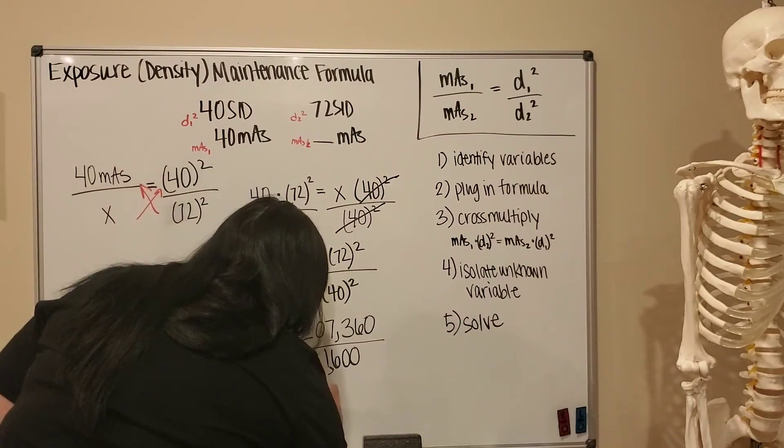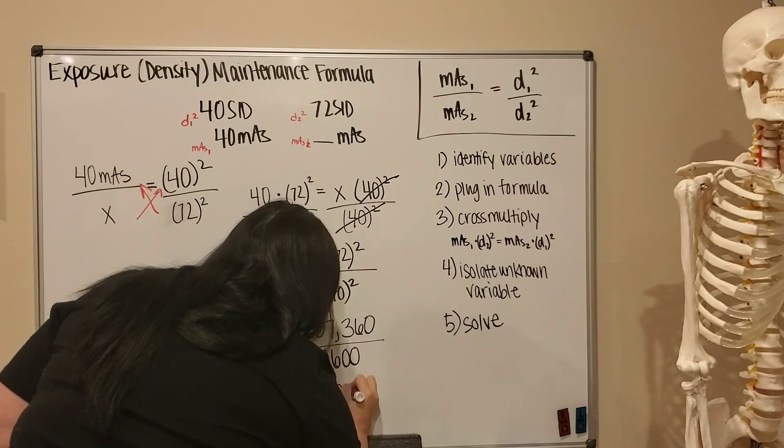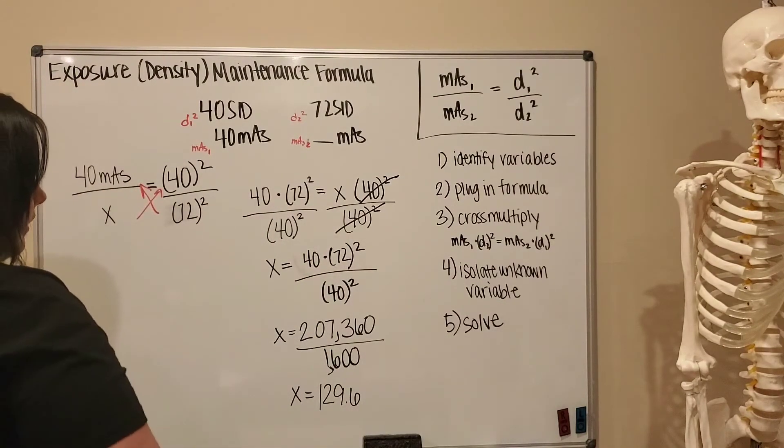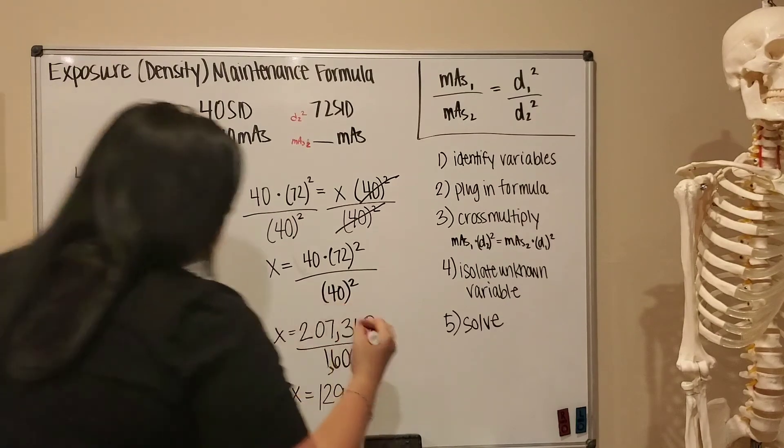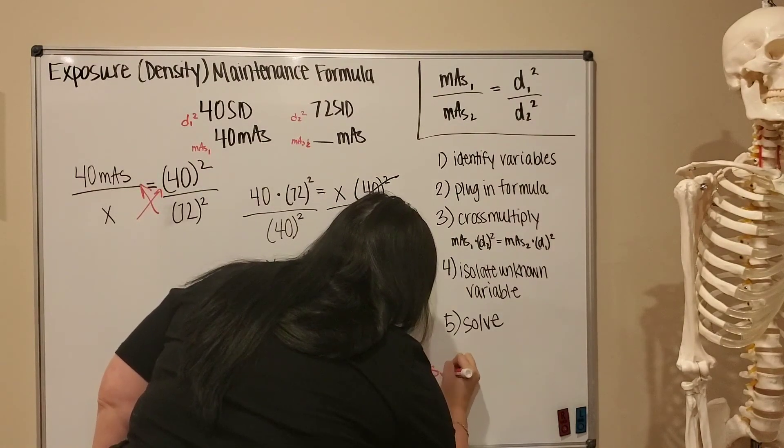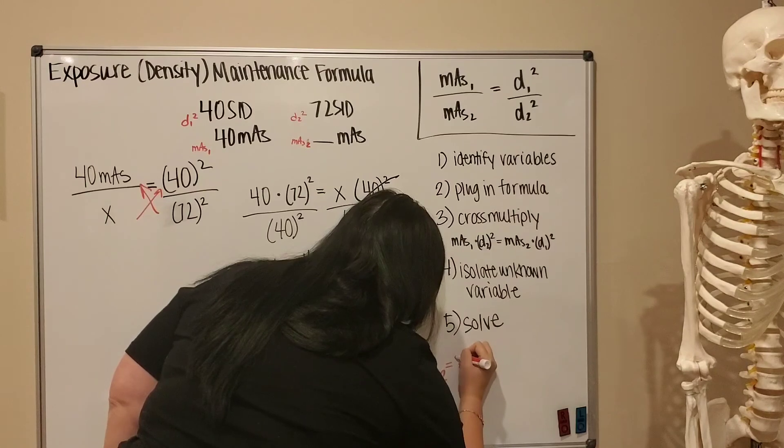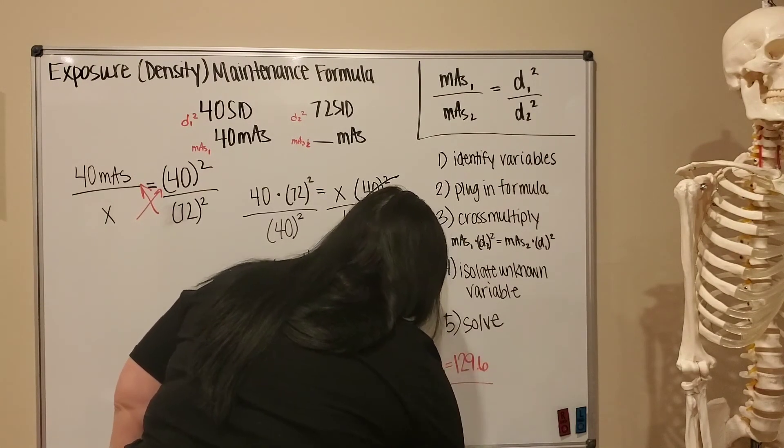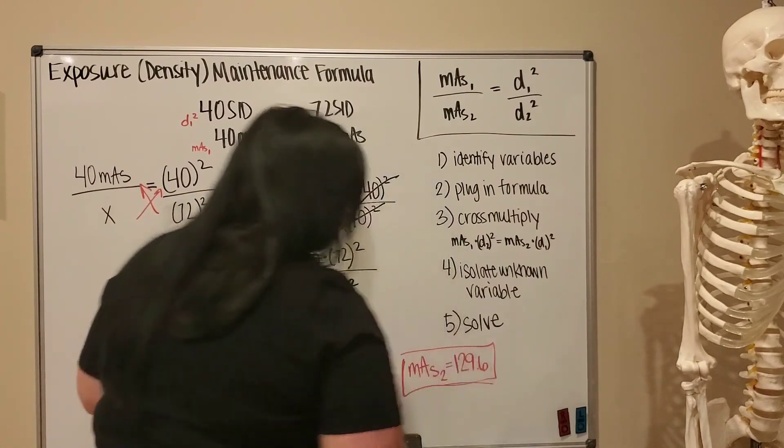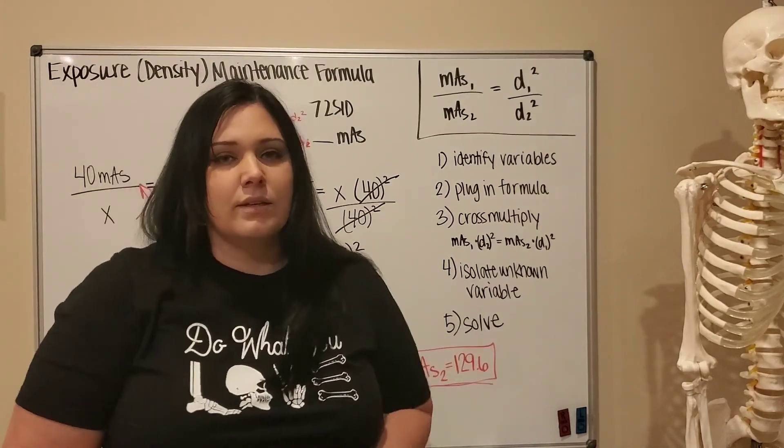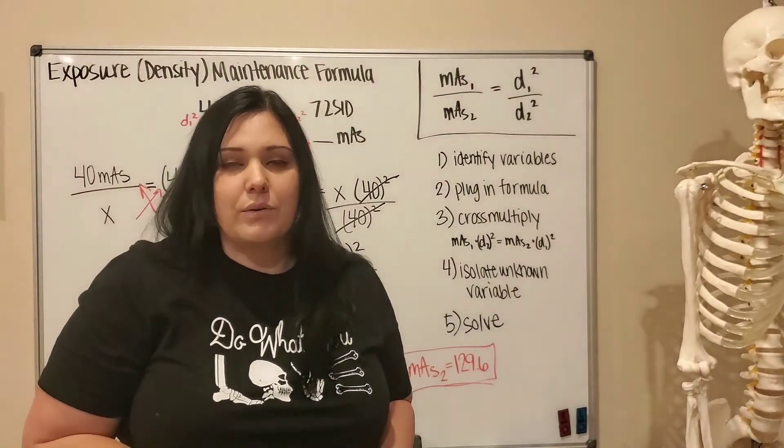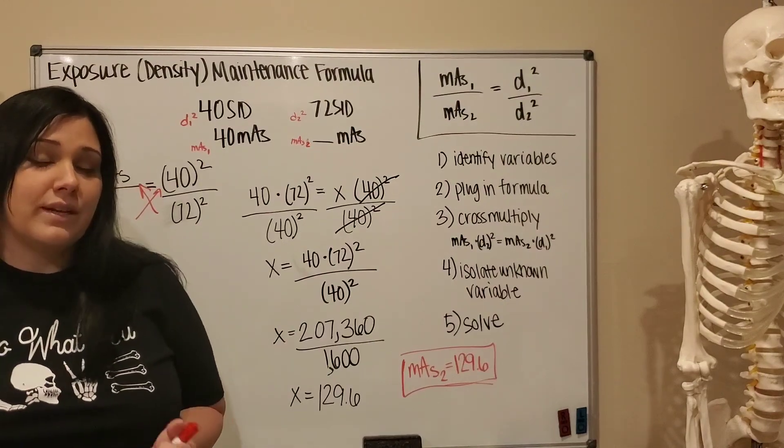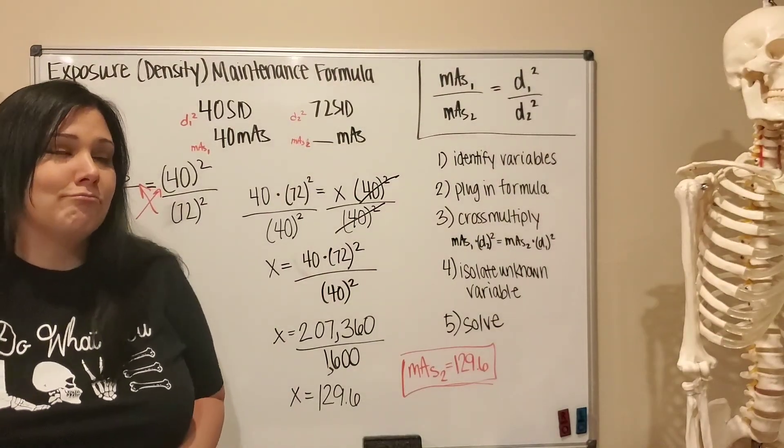X is going to equal 129.6. Okay, that means your final answer is going to be mAs 2 is equal to 129.6. I like to leave my mAs rounded to the nearest tenth place. Your instructor might like it rounded to a whole number, you'll have to ask them. But through these steps you've done it, you've solved the density maintenance formula. Not too bad.